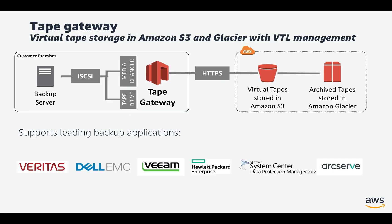You add virtual tapes as you need to archive your data. The Tape Gateway can be deployed on VMware or Hyper-V hypervisors for on-premises installation, and it can also be deployed on EC2 if you would like to run it in AWS. Today I'm going to deploy the Tape Gateway on EC2 and use Veritas Backup Exec software to perform a sample backup. The Tape Gateway supports leading backup applications, for example Veritas, Dell EMC, Veeam, etc.